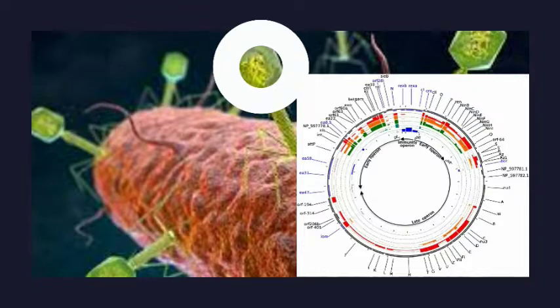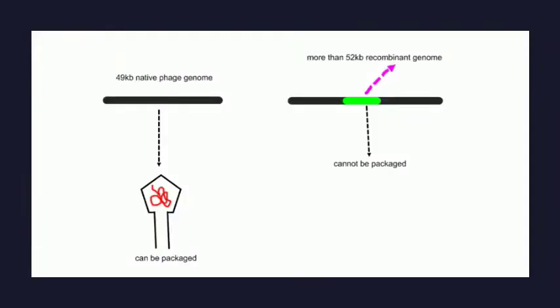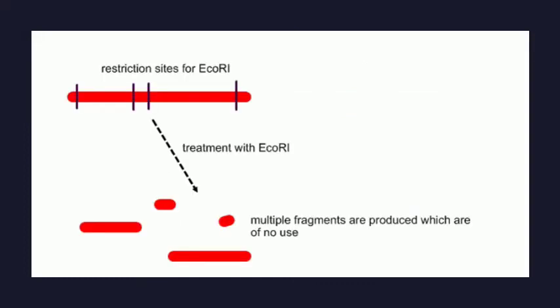The natural lambda genome is never a good cloning vector for two reasons. First, its genome gets packaged only if the genome is not larger than 52 kbp, leaving the possibility of a tiny insert size of up to only 3 kbp. Secondly, it is devoid of many good unique restriction enzyme sites required for cloning.